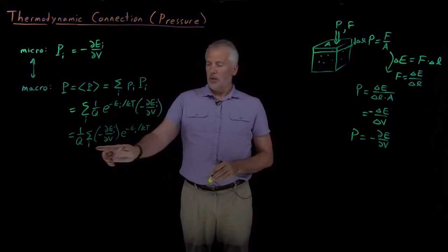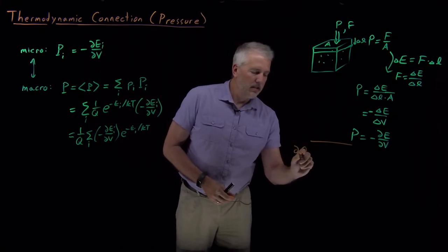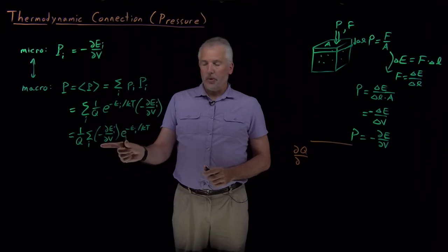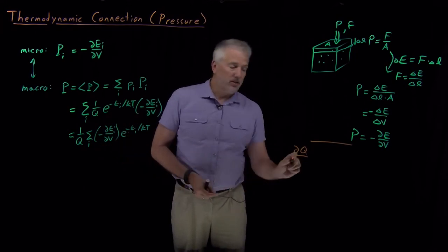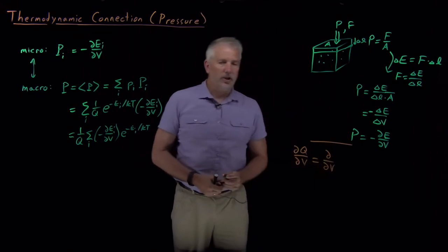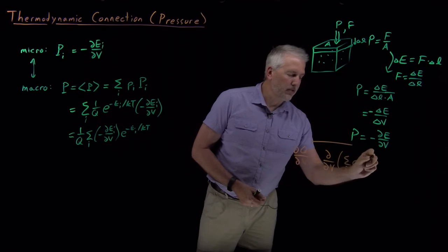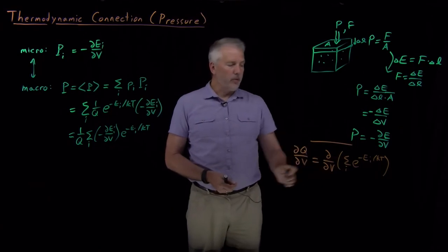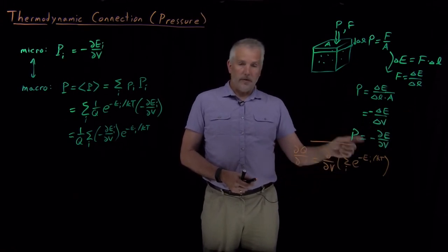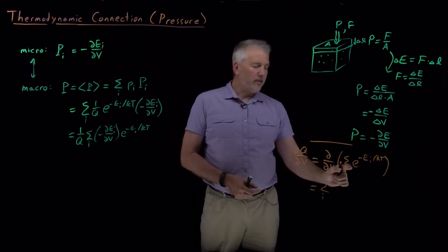To understand what this summation means, we'll make a mathematical aside. Just like when we derived the thermodynamic connection formula for energy — where the summation was related to the derivative of Q with respect to temperature — in this case it's going to be related to the derivative of Q with respect to volume. Let's figure out what the derivative of the partition function with respect to volume is: it's the volume derivative of the sum of all the Boltzmann factors. The derivative of a sum is the sum of the derivatives of each term.